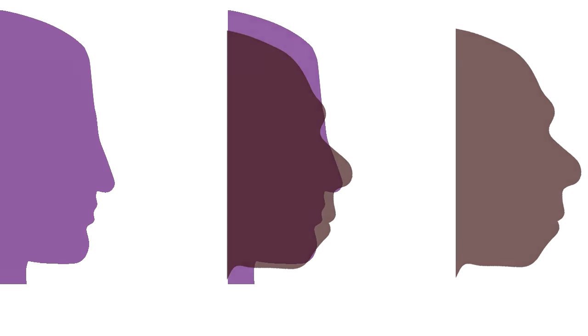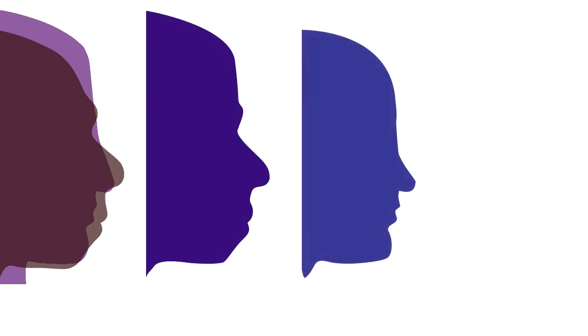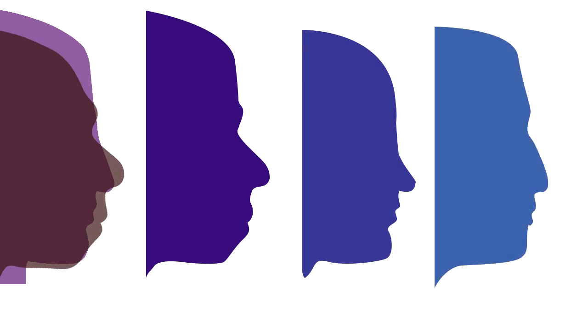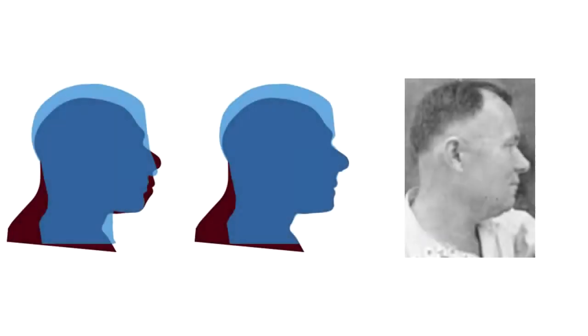We have two distinct forms or variants which code analogous features. At interbreeding, their fusion can take the most distinct shapes, the limits of which are dictated by their initial matrix. Observe particularly the nose shape. Here's another example, now with a photo.